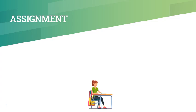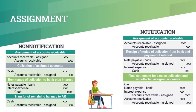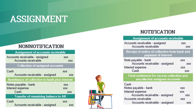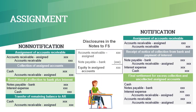Assignment can be done either on a non-notification basis or notification basis. On a non-notification basis, the assignor remits the collections from customers to the assignee. On a notification basis, the assignee gives notice of the collections from customers to the assignor. Assignment is recorded as a debit to accounts receivable assigned and a credit to accounts receivable. The assigned accounts are still carried in the books of the assignor. The assignor shall disclose its equity in assigned accounts as follows: Accounts receivable assigned less note payable to bank equals equity in assigned accounts.